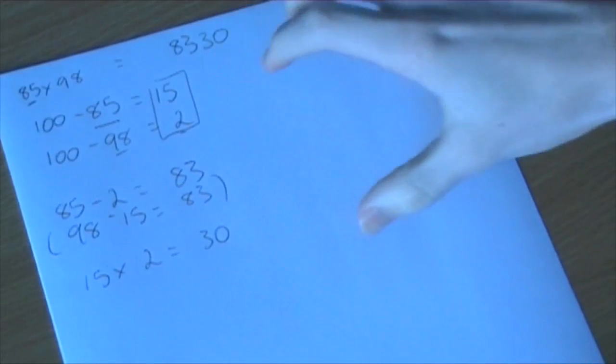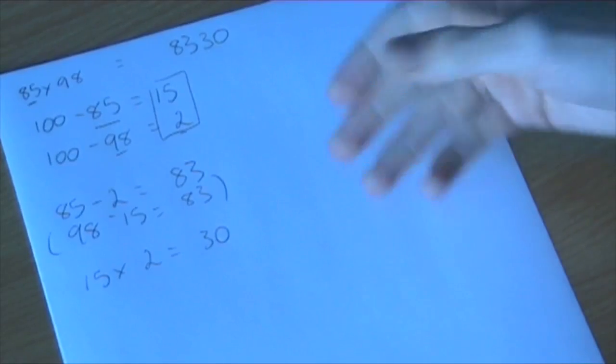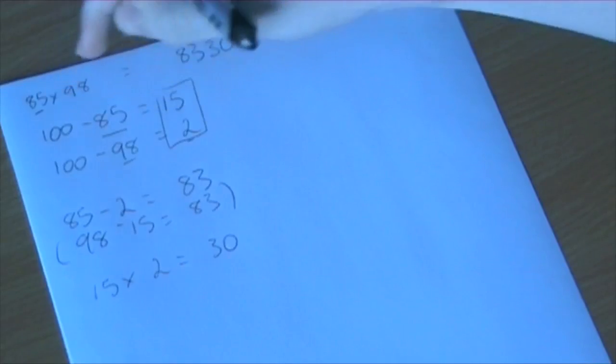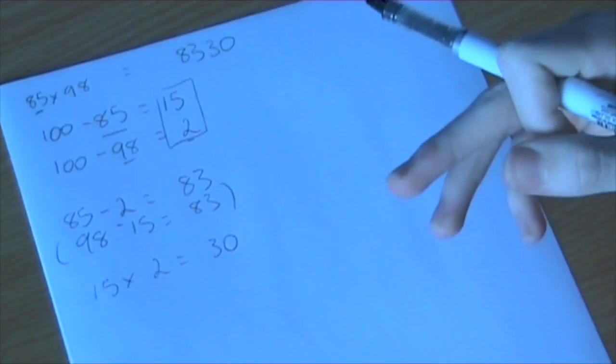Now this is, I call it a trick, but this is an actual method which works for multiplying numbers like these. Now obviously I've used 100. If you use a number over 100, you're going to have to change the trick slightly.